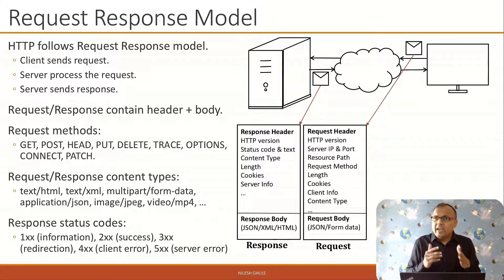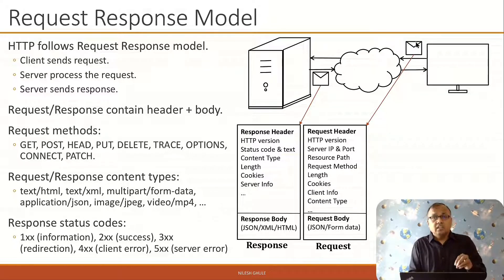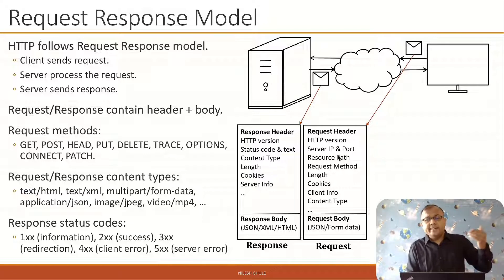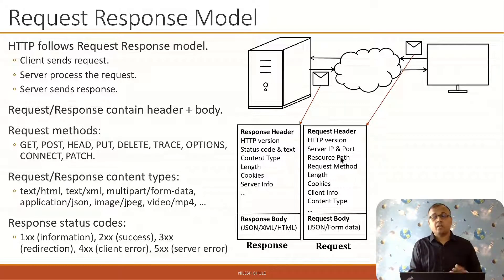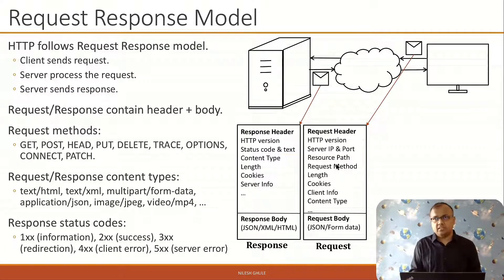The request object contains the HTTP protocol version — it could be 1.0 or 1.1. It contains the server IP address and port on which the web server is running, and also the resource path on the server to which the client is making a request.